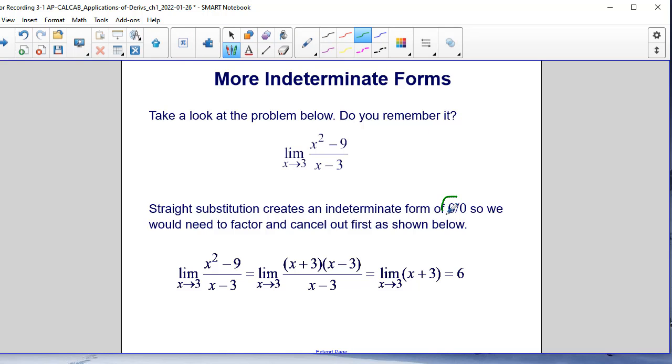So some type of further work was needed. And what we did back then was we factored x squared minus 9 to get x plus 3 times x minus 3. At this point, we canceled out the x minus 3s from both the numerator and denominator, and we were left with x plus 3.